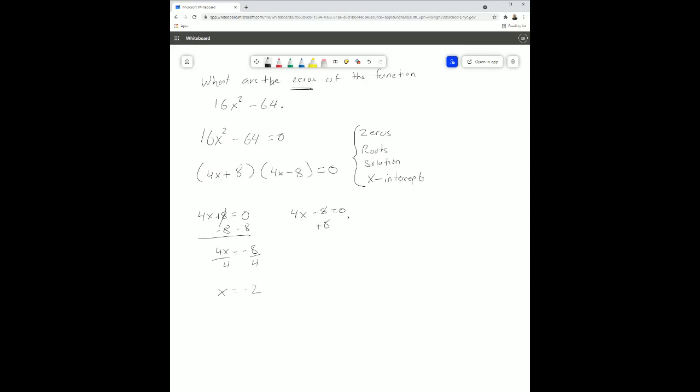We have to also do this over here. So add 8 to both sides. 4x is equal to 8. Divide by 4. Divide by 4. Divide by 4x is equal to positive 2. So we can now say the zeros, or the solutions, or the roots, or the x-intercepts, they're equal to, we can write this as a solution set. The solution set of x is negative 2 and positive 2. And there you go.